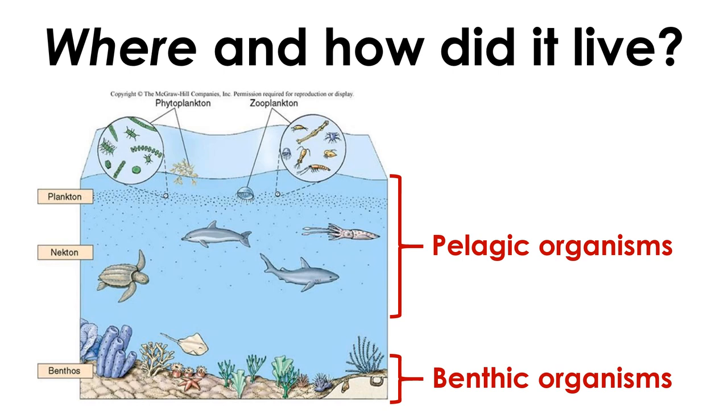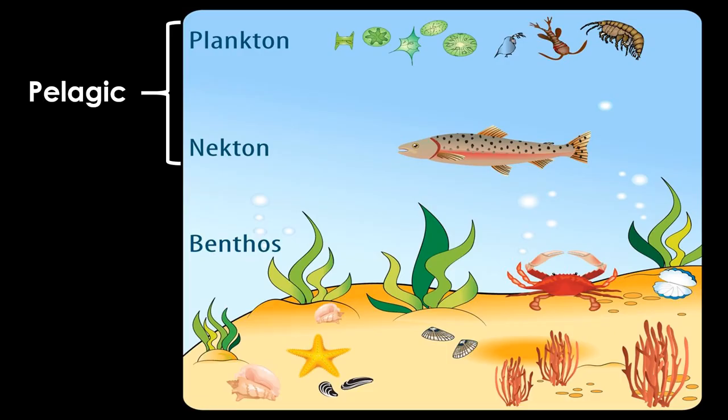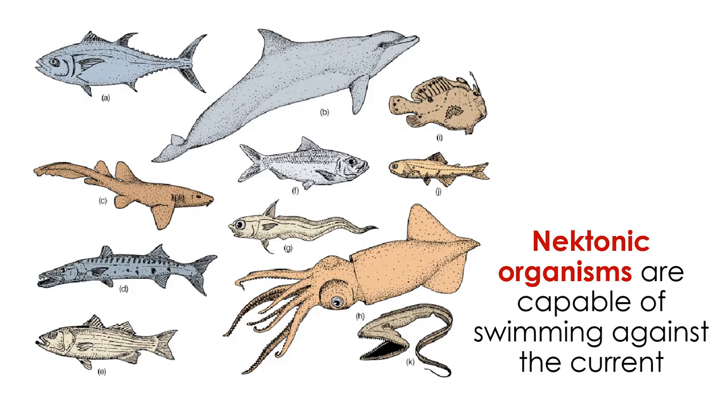We can go one step further: pelagic organisms may belong to the plankton or the nekton. Nektonic organisms are swimmers — they can move through the water column under their own power. In contrast, planktonic organisms are floaters; they simply drift in the ocean currents, waves, and tides. Nektonic organisms are capable of swimming against the current.